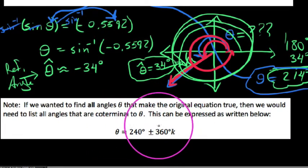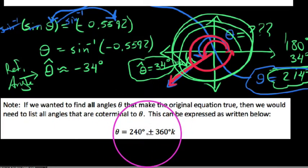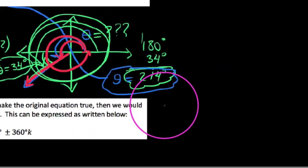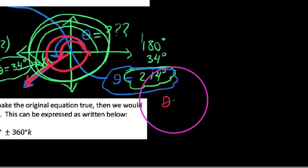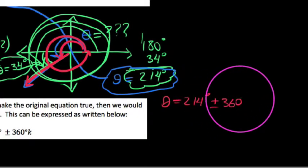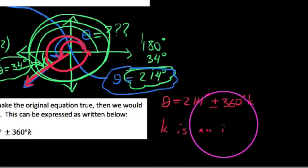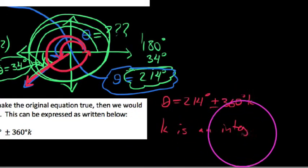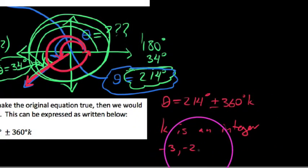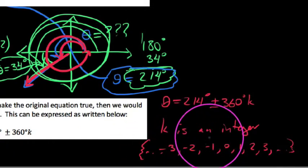I don't know where I got this 240 plus or minus 360k from. What I would say is this, the answer we got, theta, was equal to 214 degrees. We'll write this, plus or minus 360 degrees k, where k is an integer. Recall that an integer is any number on this list here in this set of numbers, dot dot dot ellipsis, dot dot dot ellipsis. There's a set, but basically a whole number.